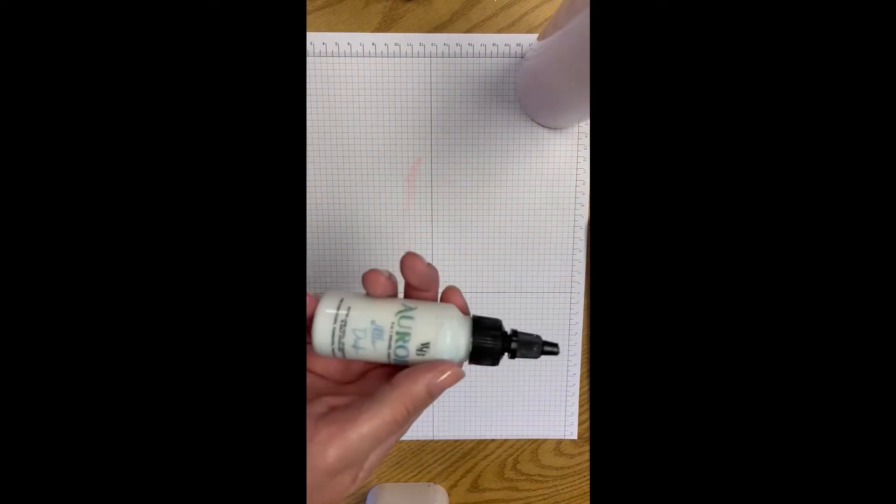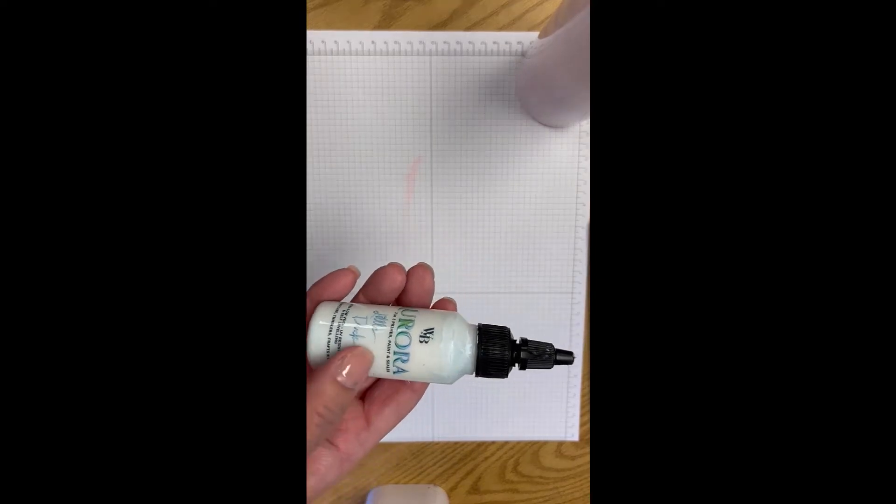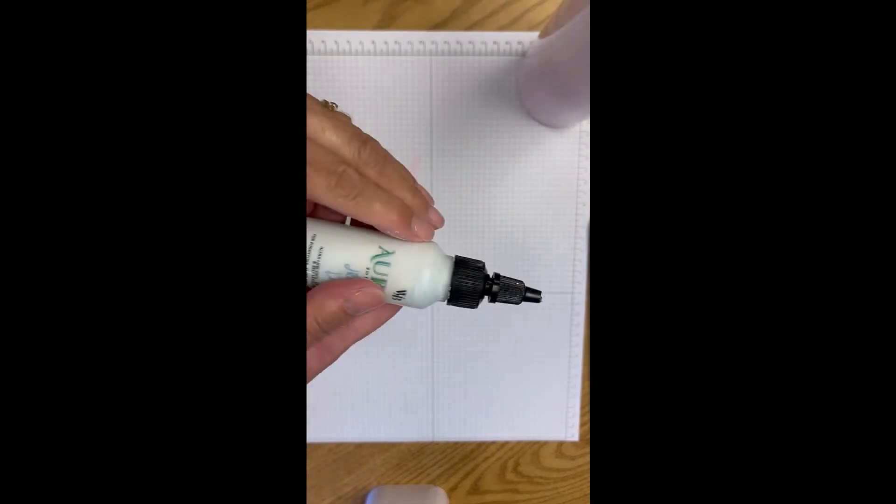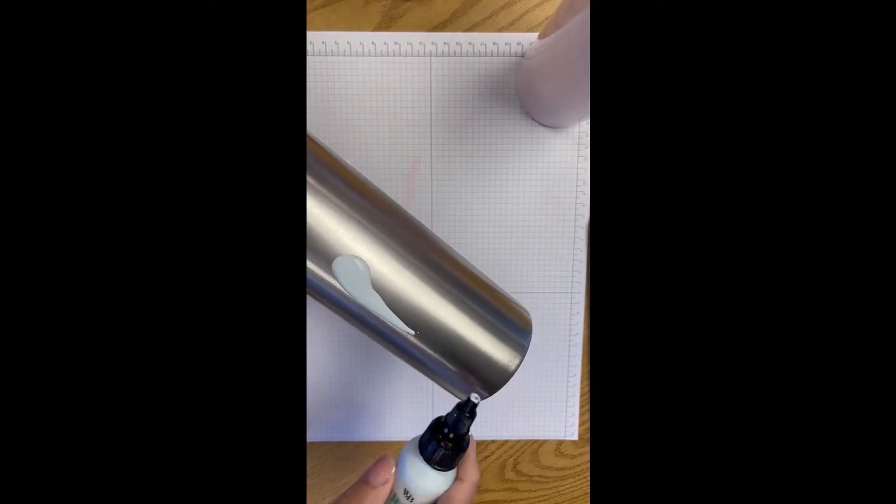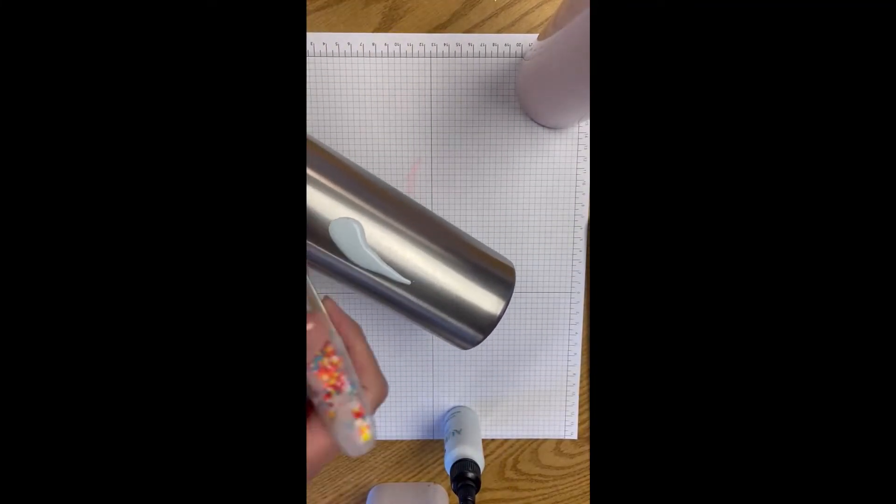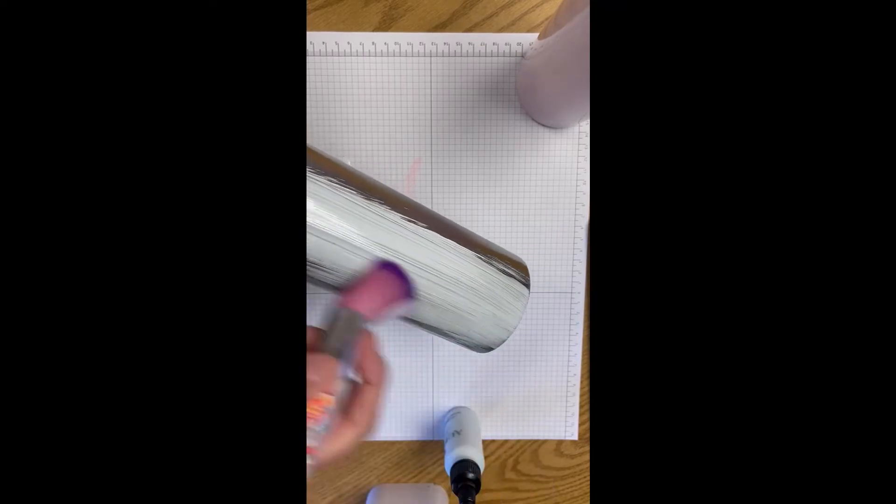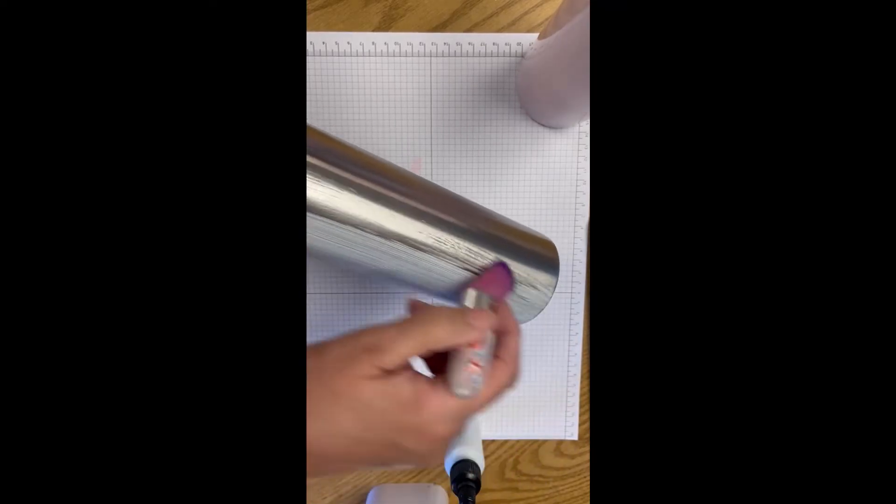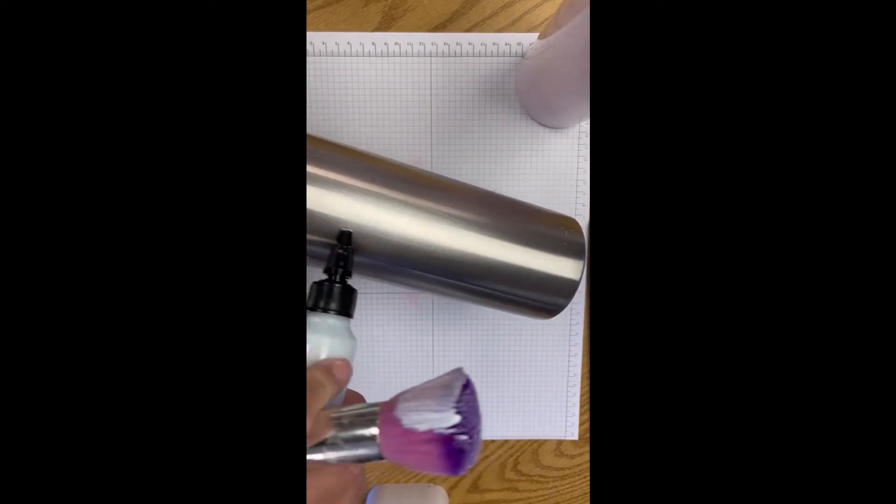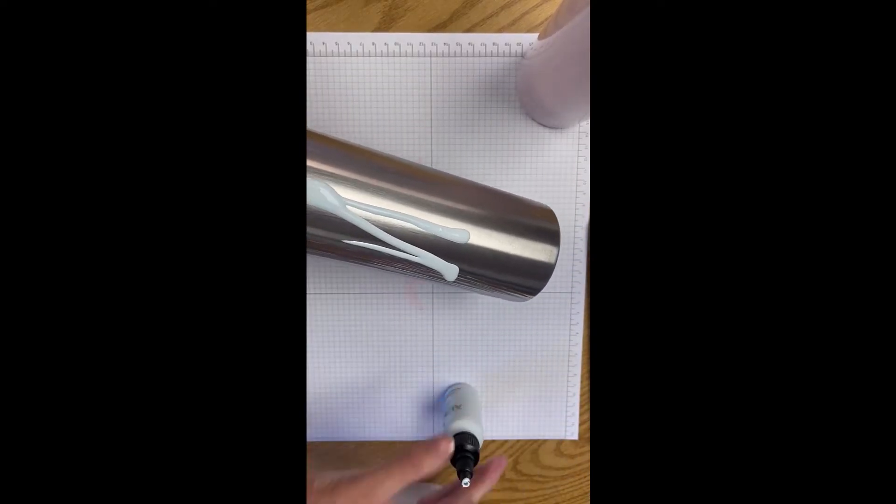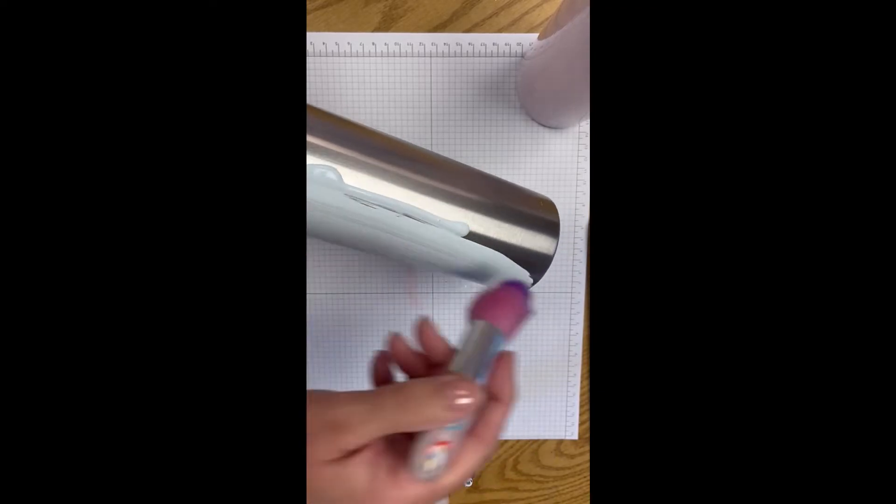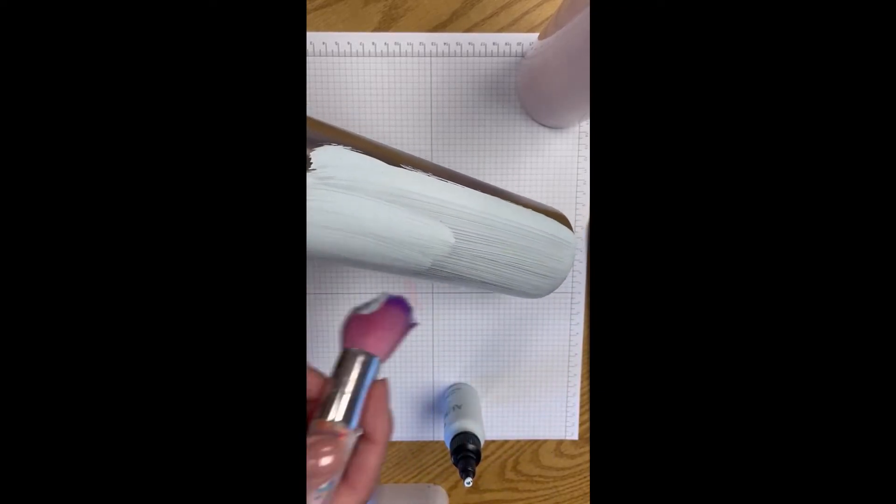Now I'm going to use the Aurora three-in-one primer paint and sealer, so I don't have to do any mixing for this at all. So I'm going to give it just a little shake, apply it with the brush, and start painting it on. Again you're using long brush strokes. You can go all the way around your tumbler.